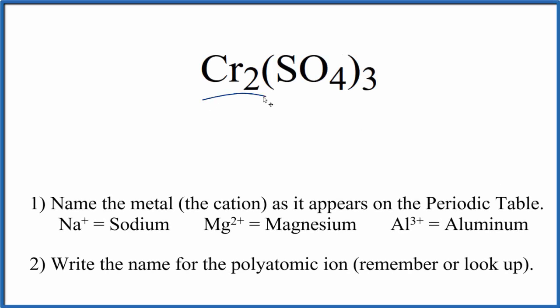To write the formula for Cr₂(SO₄)₃, we first need to recognize that chromium is a metal, it's a transition metal, and then SO₄, this is a polyatomic ion. We have three of them. So because we have this transition metal and this polyatomic ion, which is a group of nonmetals, we're going to treat this as an ionic compound here and use these rules to write the name.